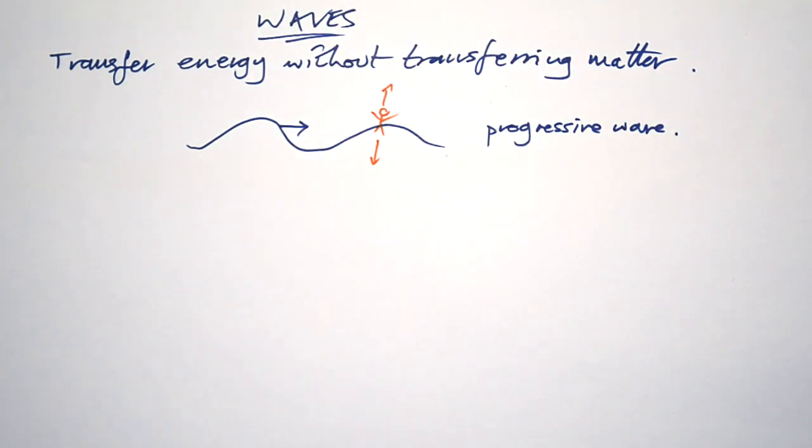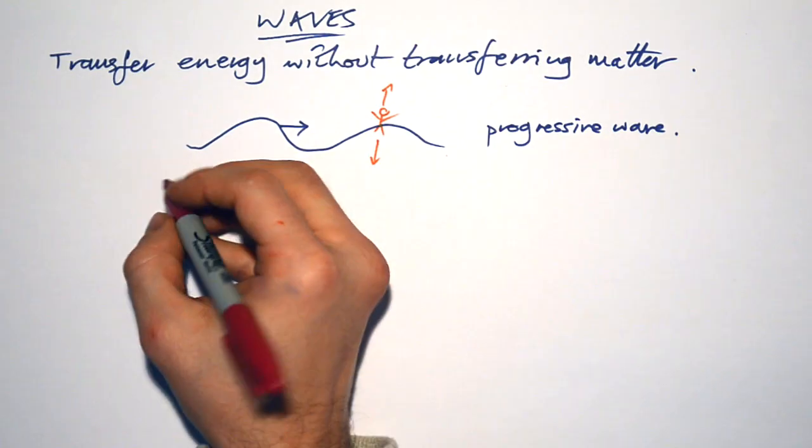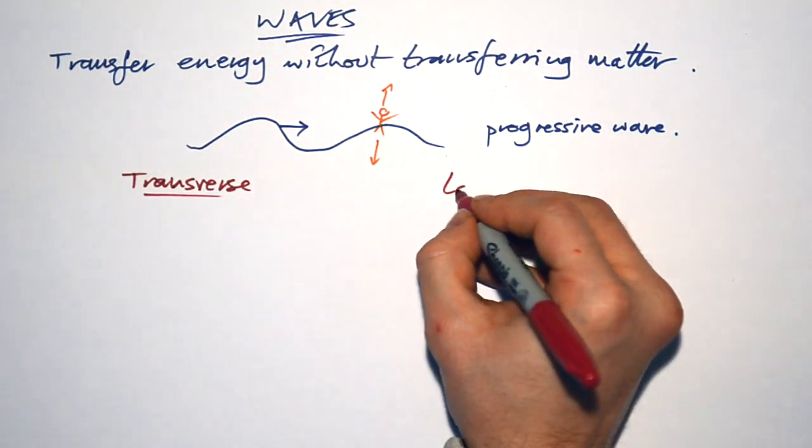Now what we do is apply this real wave that we can see in real life to all sorts of different waves in physics. Now we have two types of waves. We have transverse and we have longitudinal.